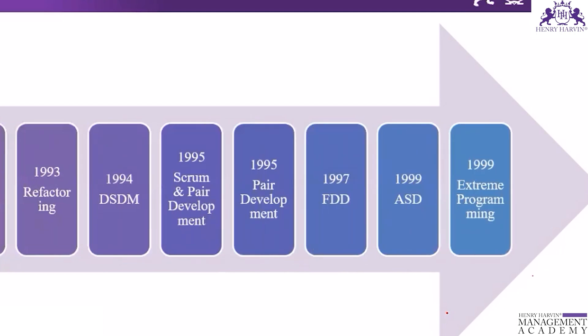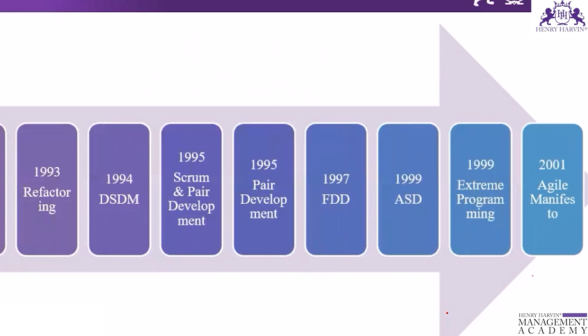Also in 1999, a new methodology called Extreme Programming (XP) was introduced by Kent Beck. XP was also used by NASA, who adopted it because longer projects were not very successful with traditional SDLC. In 2001, the Agile Manifesto was written, containing four values and 12 principles, which we will read in subsequent sessions.